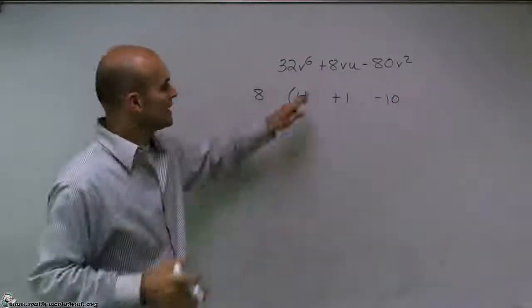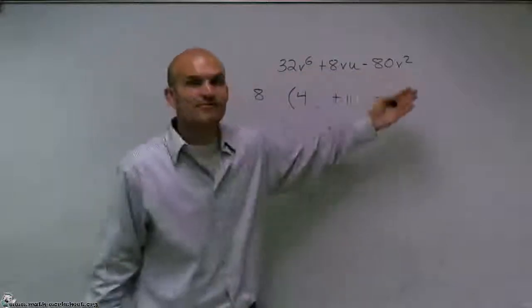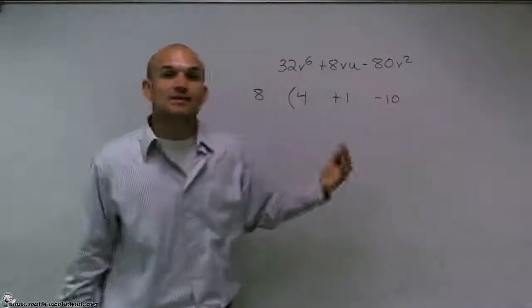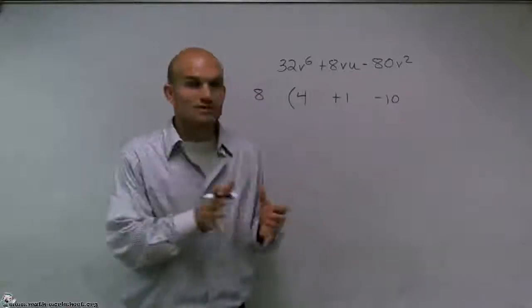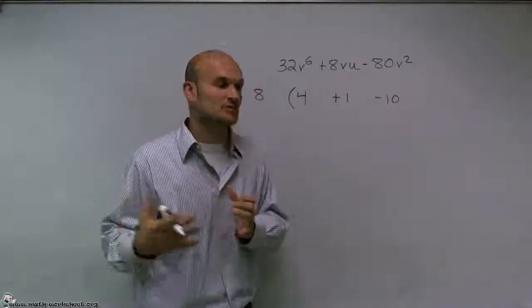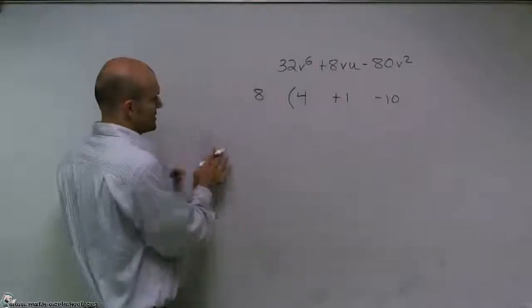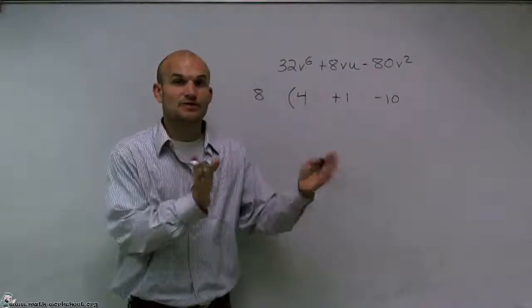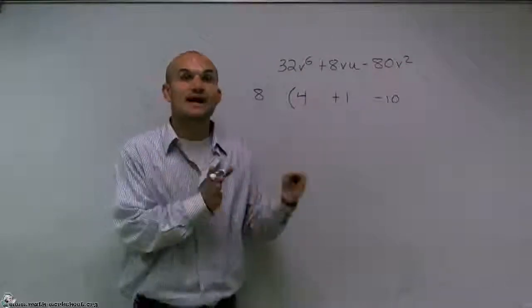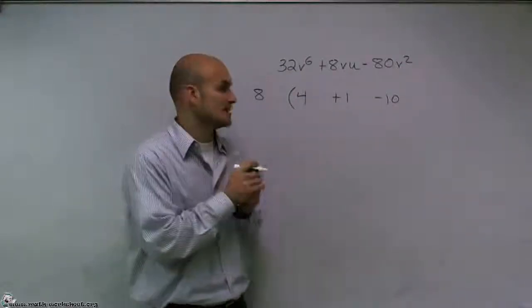Now, the next thing we need to do is look at our variables and determine is there a variable that we can factor out as well that they all share. And remember, we have to use our rules of exponents when we're factoring out of variables. Because the rules of exponents say, if you're multiplying exponents, you add them up. And if we're going to divide out, then we're going to subtract the exponents.